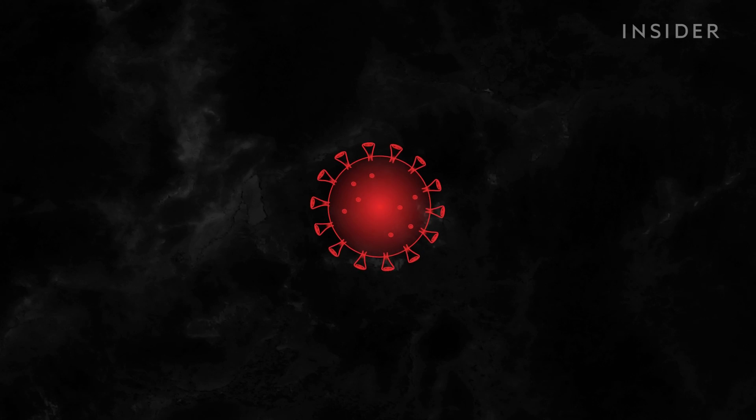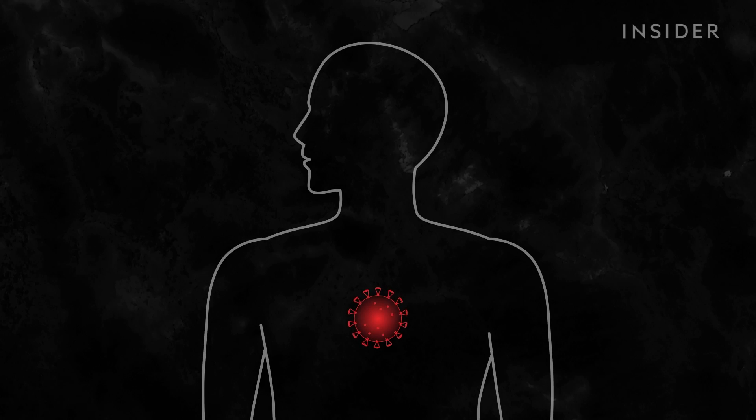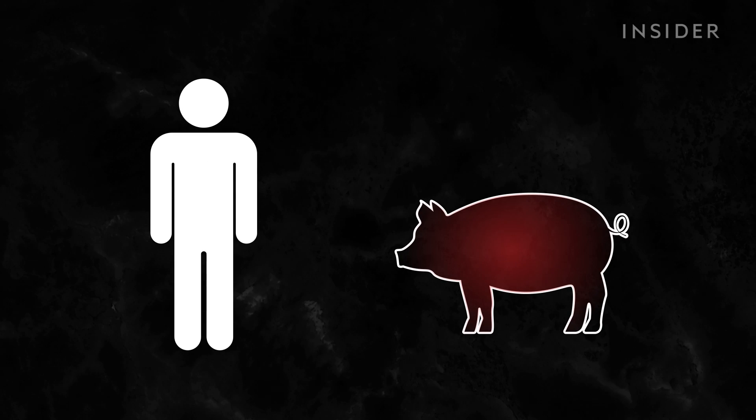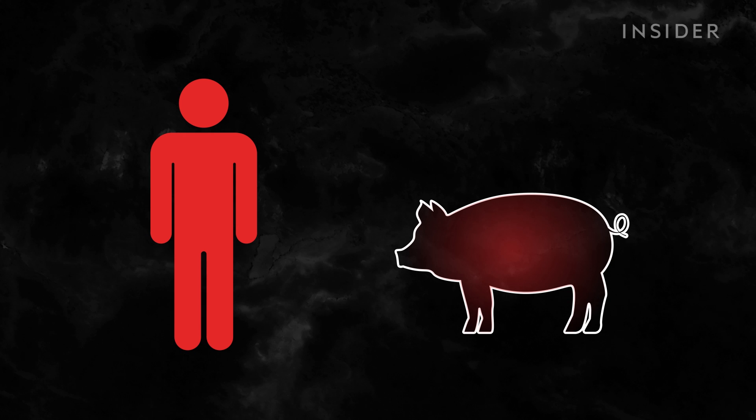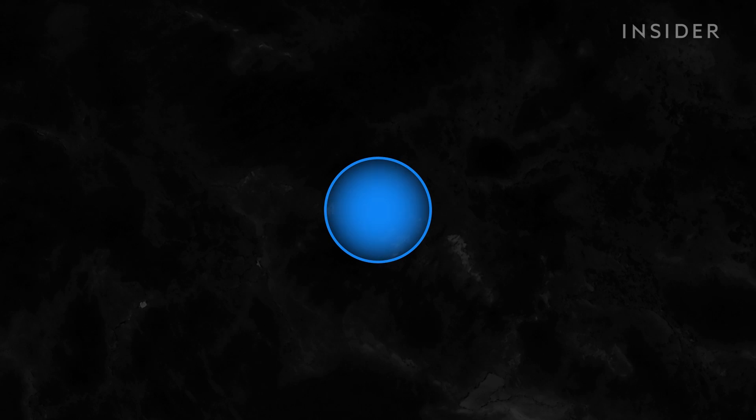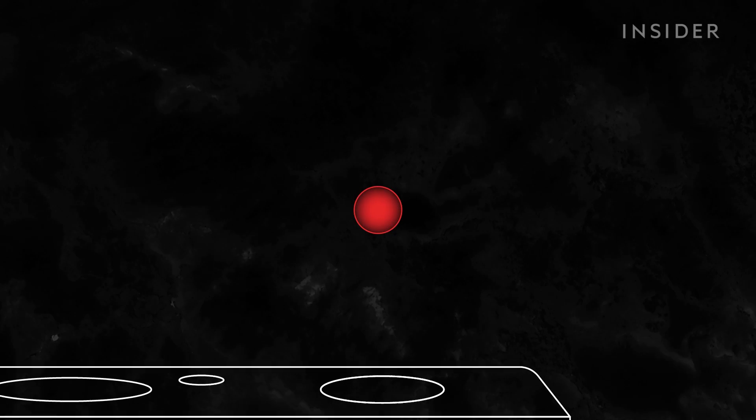Viruses don't want to kill their hosts. No host means no virus. But new diseases are so dangerous because humans don't have the same immunity as the virus's reservoir host. And because there are so many, it's currently not possible to predict when or what specific viruses will spill over. But we do know the conditions in which spillover can occur.